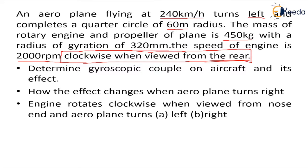Whenever we are solving questions regarding velocity diagrams, it is very important to know where the viewer is placed and what is the sense of rotation of the rotor — whether it is clockwise or anti-clockwise. We have to find: first, the gyroscopic couple on the aircraft and its effect when turning left; second, the effect when turning right; and third, if the engine rotates clockwise from the left, how the gyroscopic couple effect on the aircraft changes.